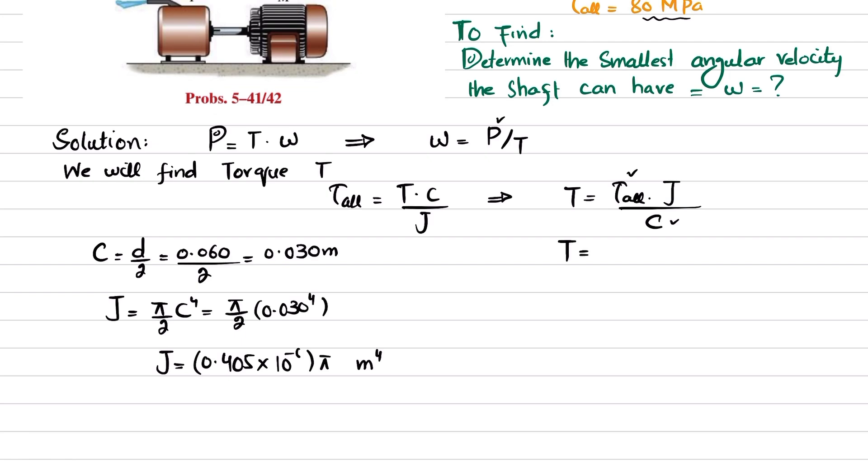Now you have all the values. Put them in this formula: allowable shear stress is 80 times 10 to the power 6, multiply by J which is 0.405 times 10 to the power minus 6 times π, divide by c which equals 0.030.